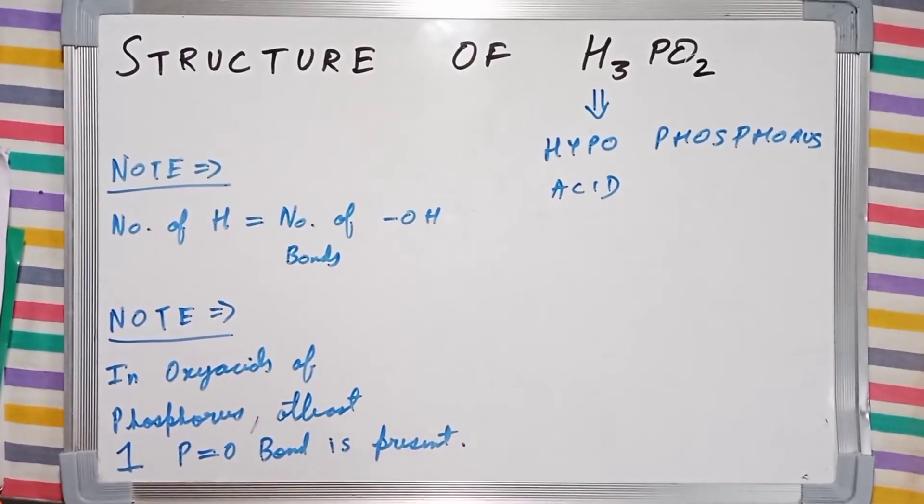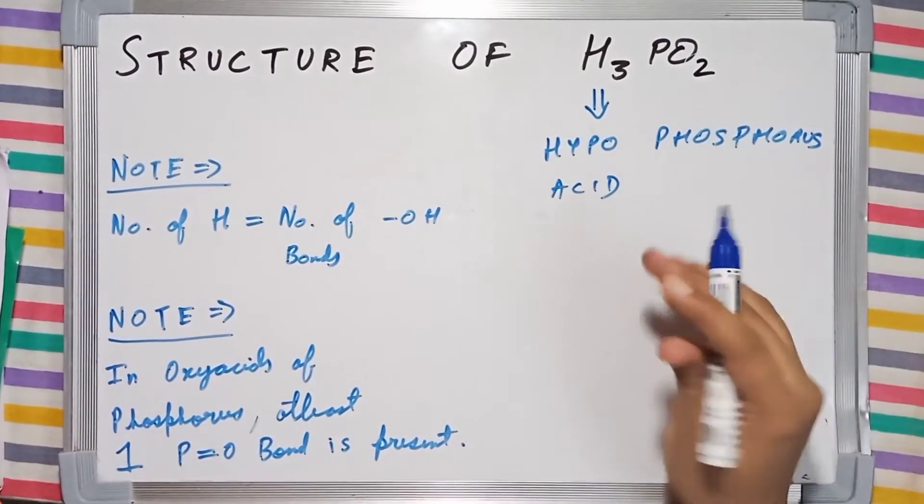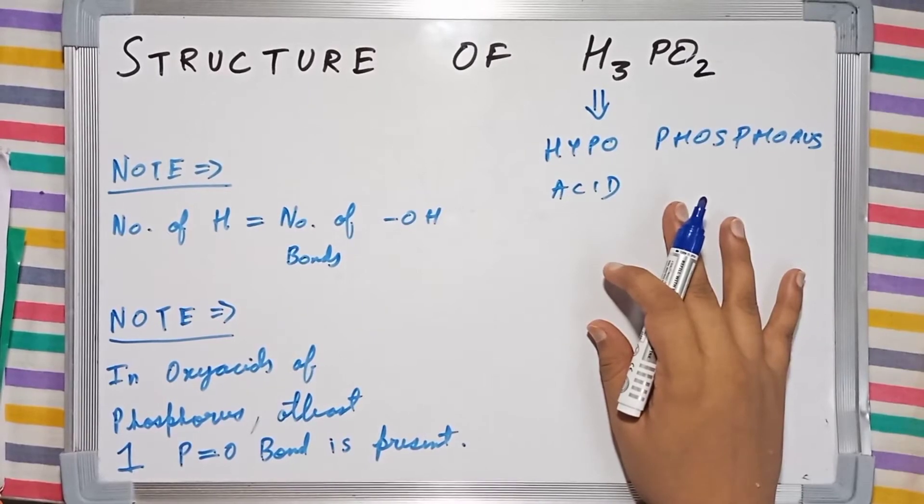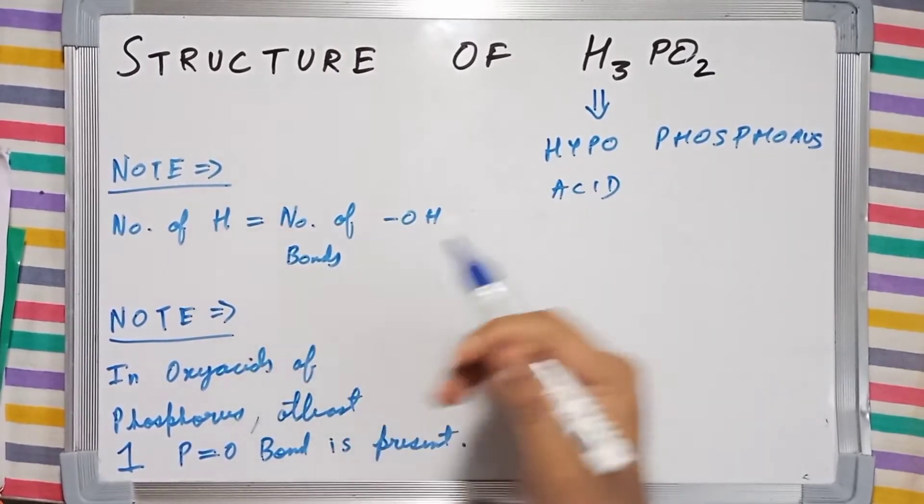We are going to draw the structure of H3PO2, which is also known as hypophosphorus acid. Now notice the two notes written here.